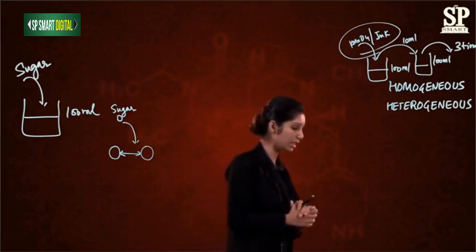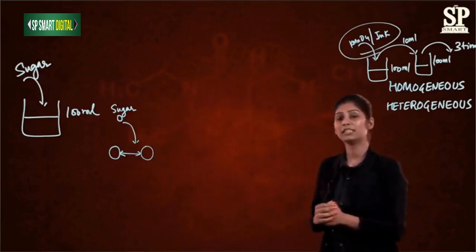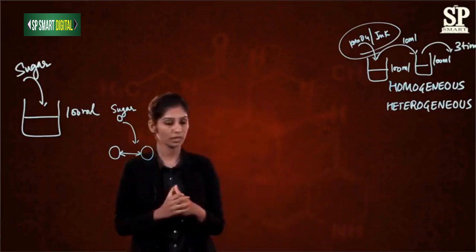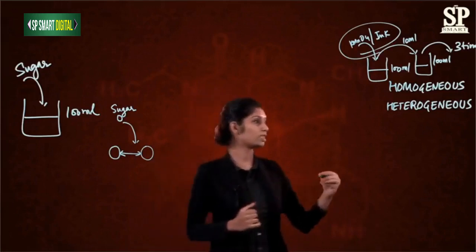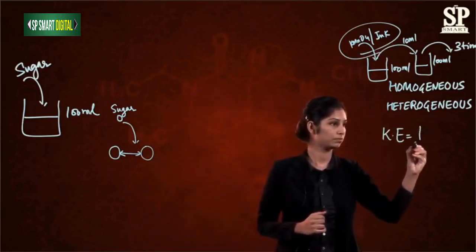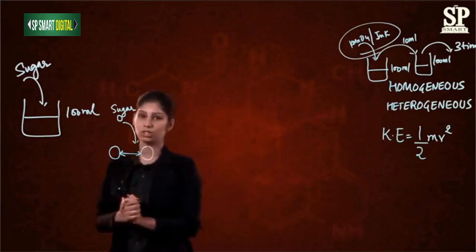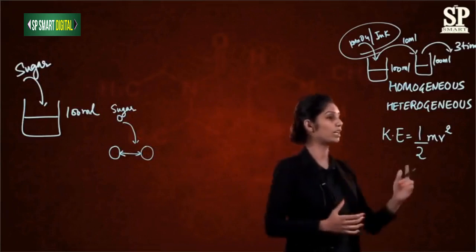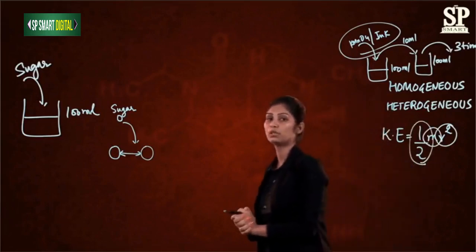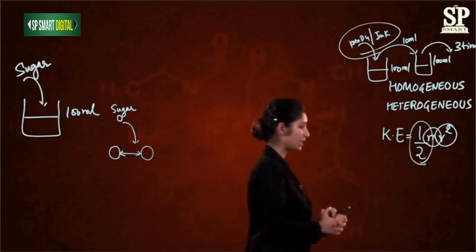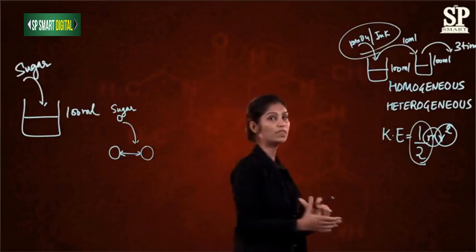As discussed earlier, these particles have space between them — that is the first characteristic. The second characteristic is that these particles are continuously moving. Since the particles are moving, they possess kinetic energy. When any substance is moving, it possesses energy — that energy is kinetic energy. Kinetic energy equals 0.5 multiplied by mass multiplied by velocity squared. Since the particles are continuously moving, they have kinetic energy, and this kinetic energy increases with the increase of temperature.